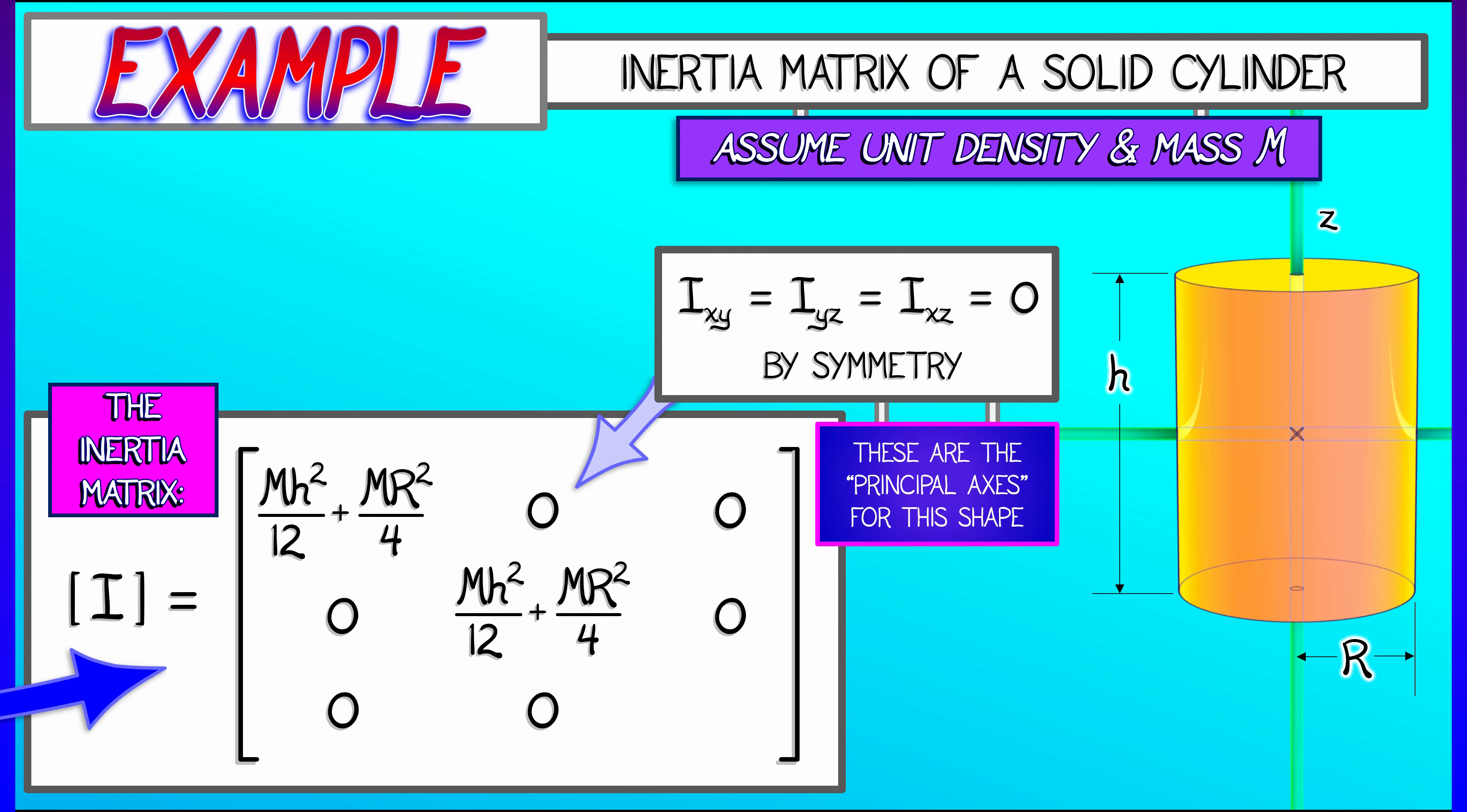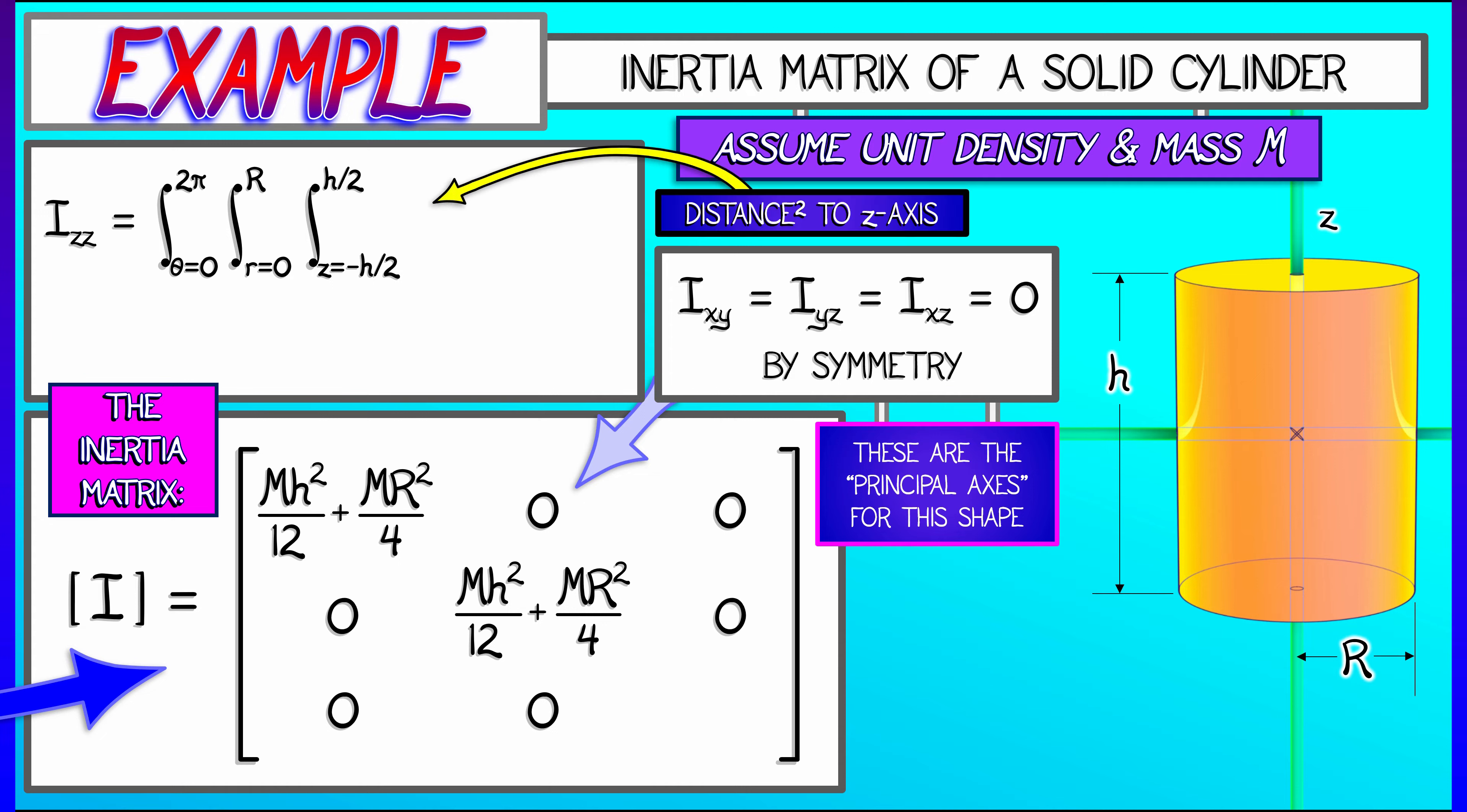You should go back and check the definition of those mixed moments of inertia, check to see that these integrals are zero if you're not comfortable arguing by symmetry. But this last term, Izz, is not zero. It is the moment of inertia about the z-axis, where what we have to integrate is the distance squared to the z-axis. That is x squared plus y squared. That is simply r squared.